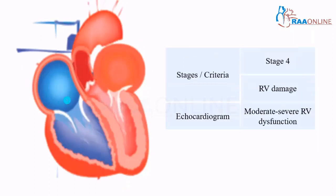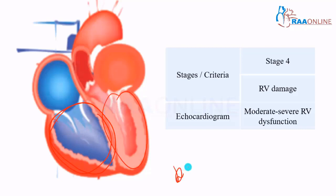In Stage 4, the right ventricle is also damaged. Your left ventricle is damaged as well. There is going to be biventricular dysfunction in Stage 4.